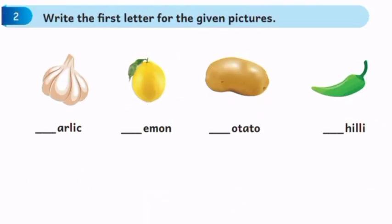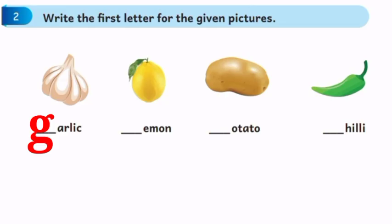Write the first letter for the given pictures. See the first picture — what is this? Garlic. So write G. The next one is lemon — write L. See the next picture — what is this? It is a potato, so write P. The last one is chili — write C.